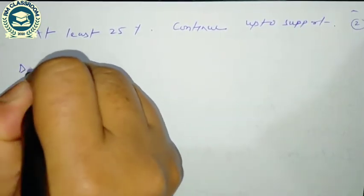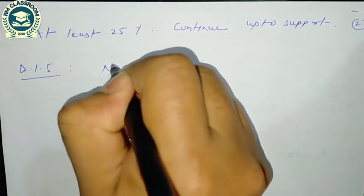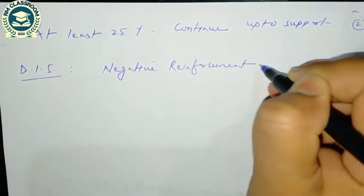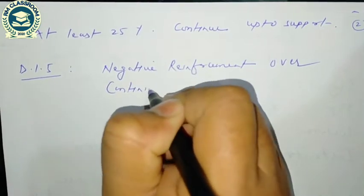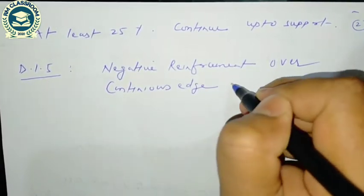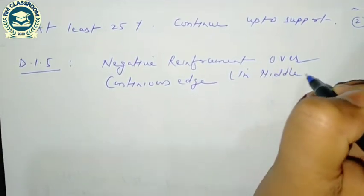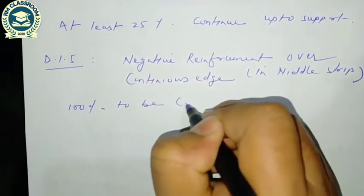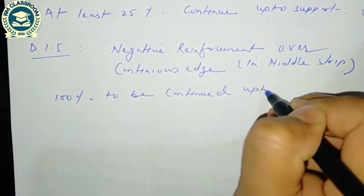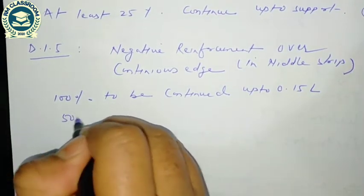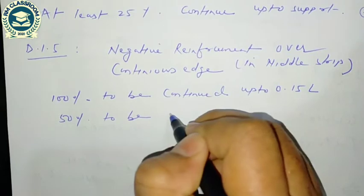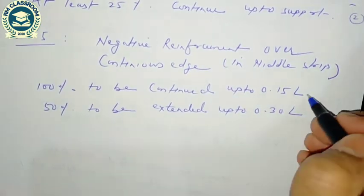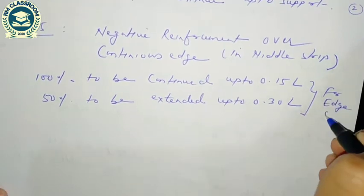Clause D.1.5 deals with negative reinforcement over continuous edges in the middle strip. 100% is to be continued up to 0.15L, and 50% is to be extended up to 0.30L. This is valid for the edge support.